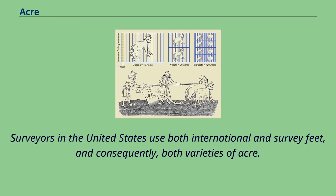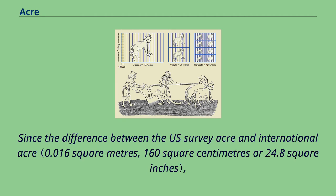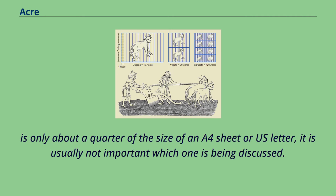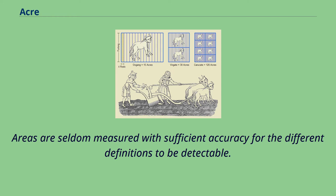Surveyors in the United States use both international and survey feet, and consequently both varieties of acre. Since the difference between the U.S. survey acre and international acre is only about a quarter of the size of an A4 sheet or U.S. letter, it is usually not important which one is being discussed. Areas are seldom measured with sufficient accuracy for the different definitions to be detectable.